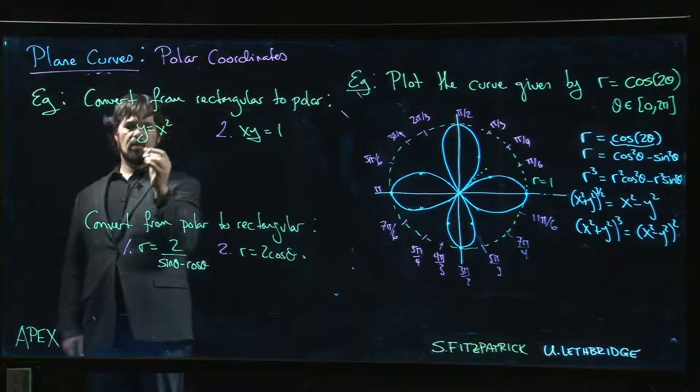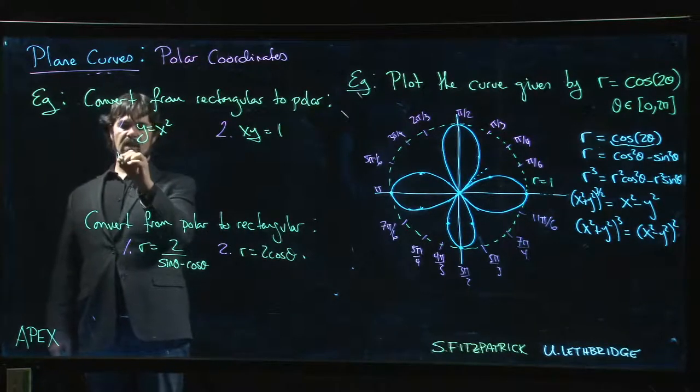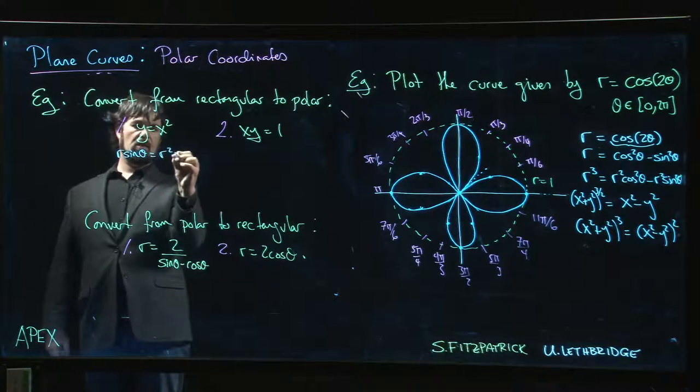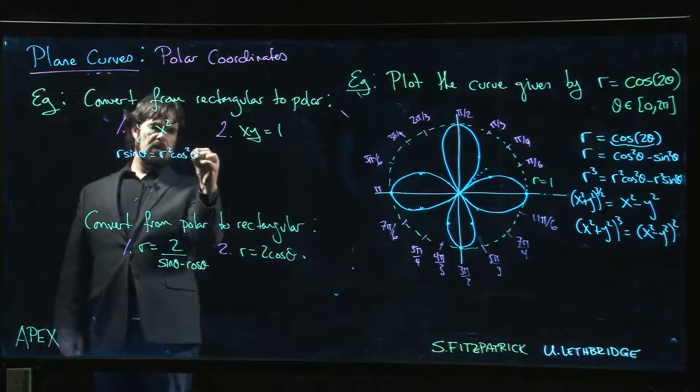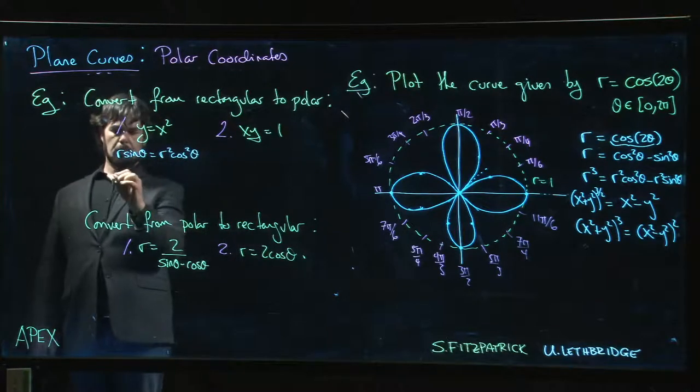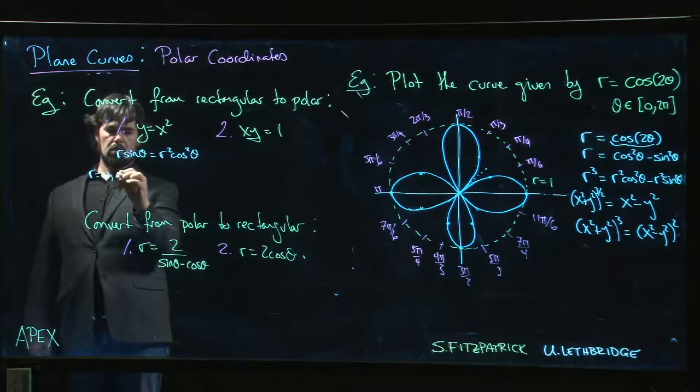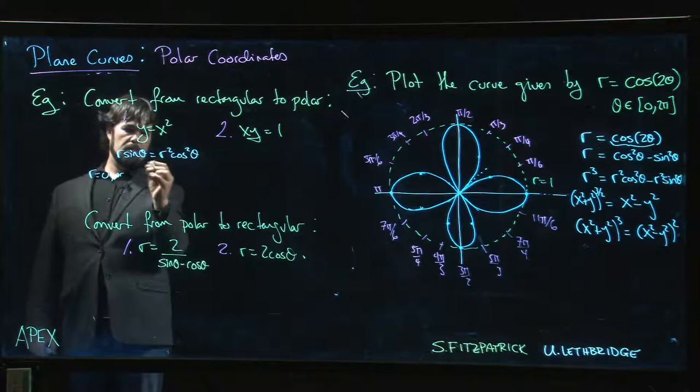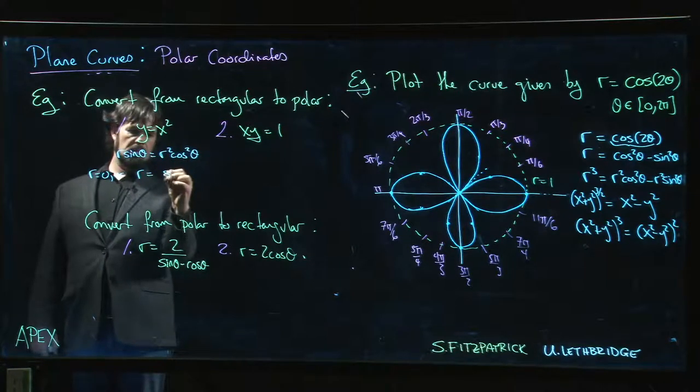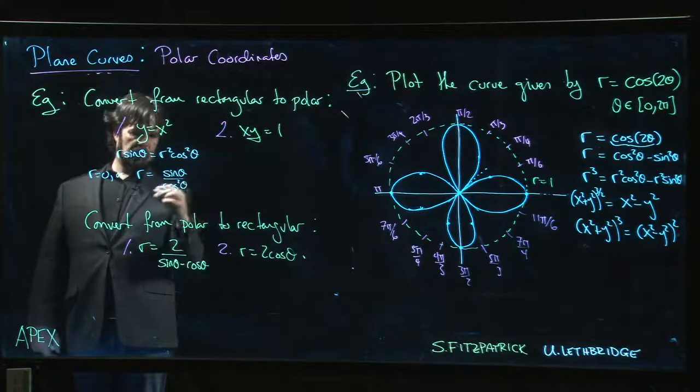Typically, if you need to jump back and forth, going from rectangular to polar is easy. We just plug in that y equals r sin θ and x equals r cos θ. We usually try to solve for r as a function of θ. We have r equals 0, or cancel r from both sides, divide by cos²θ, so r equals sin θ over cos²θ.